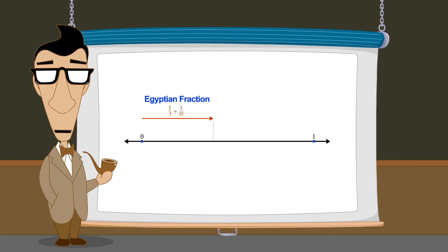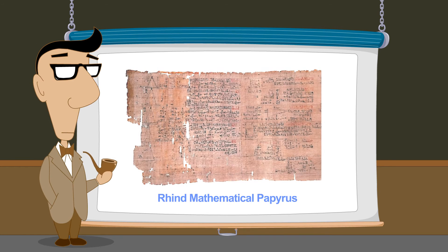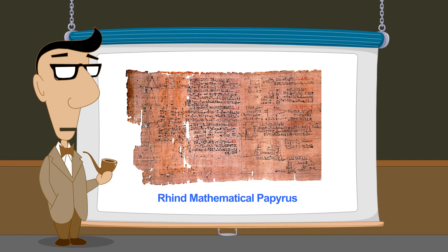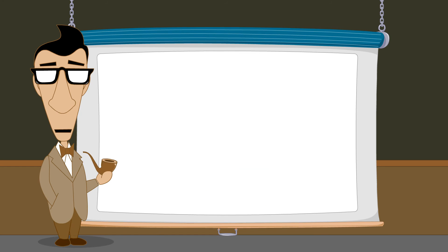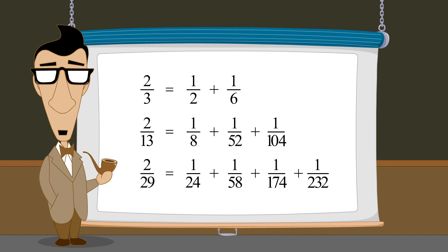The Egyptians kept tables to convert various quantities between zero and one to Egyptian fractions. The Rind mathematical papyrus from 1650 BC contained such a table. This table expressed various fractional quantities as sums of two, three, or four unit fractions.